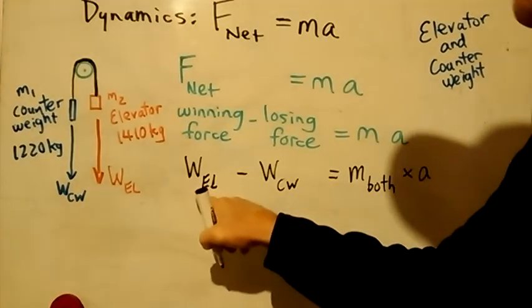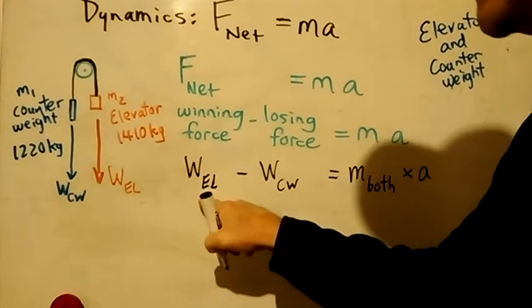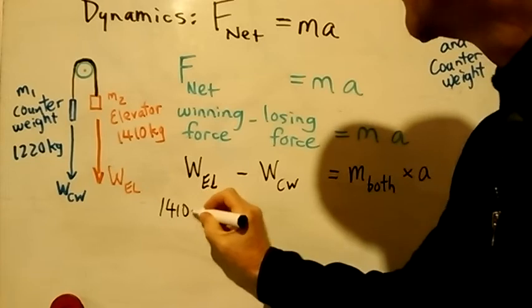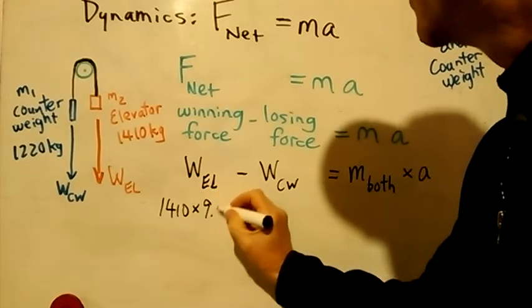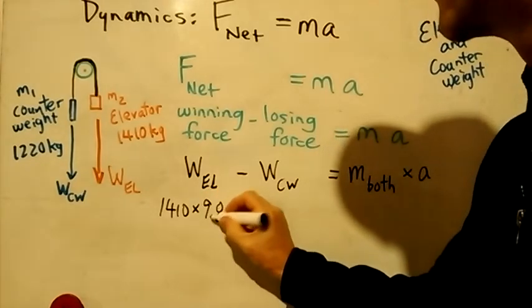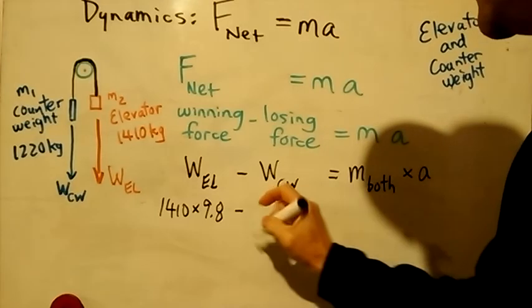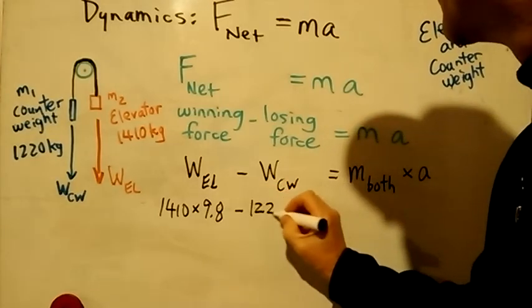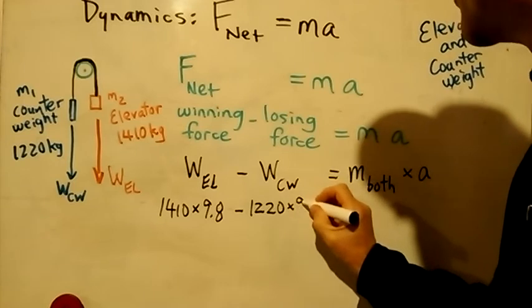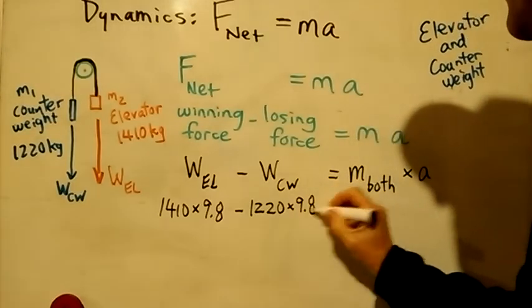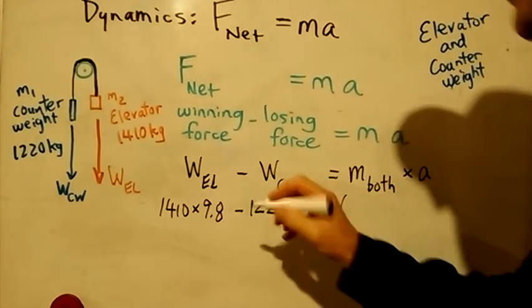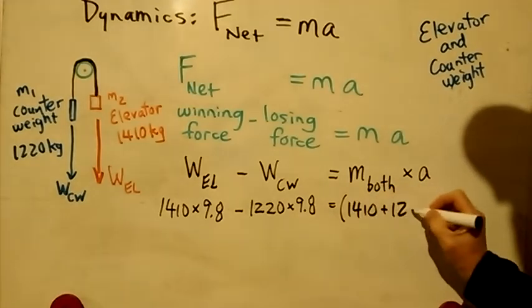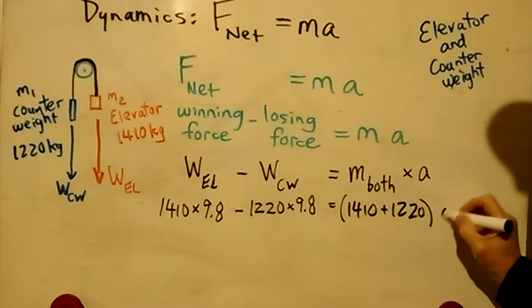To do the math, weight of the elevator—weight is always mass times gravity—so it's the mass of the elevator, 1410 times 9.8, mass times gravity. And the counterweight is its mass, 1220 times 9.8. And that equals the mass of both of them, 1410 plus 1220 times a.